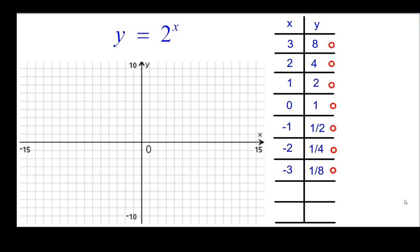So let's go ahead and plot these seven points. 3, 8. 2, 4. 1, 2. The y-intercept is at 0, 1. And then these three are getting smaller and smaller and smaller.